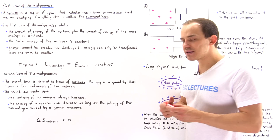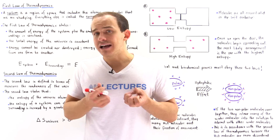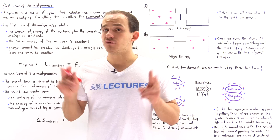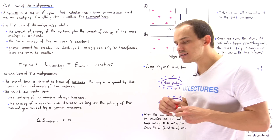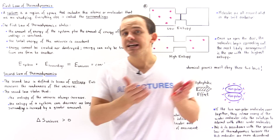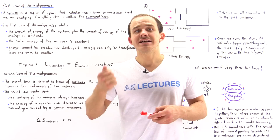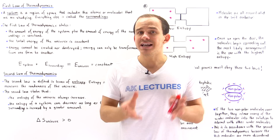Now, what about the second law of thermodynamics? The second law is commonly described using a term known as entropy. Entropy is a quantity we use to measure the amount of randomness or disorder found in our universe. What the second law tells us is that every time a real reaction takes place, be it physical or chemical, the change in entropy of the universe is always positive. So the entropy of the universe always increases in any real reaction.